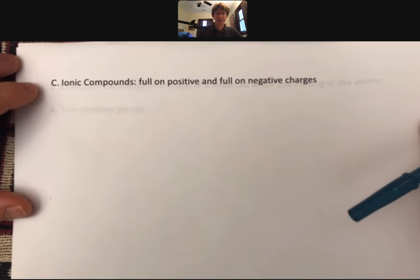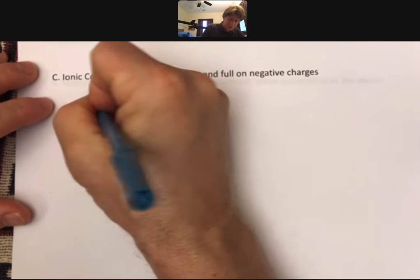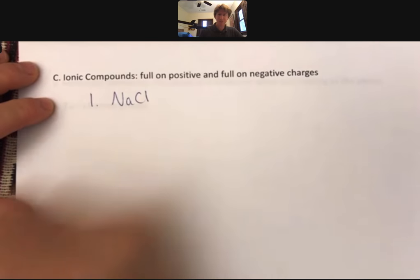So three categories. We've already done two of them. Our third one is ionic compounds. They have full-on positive and full-on negative charges. Examples of this, well, straightforward example, sodium chloride.